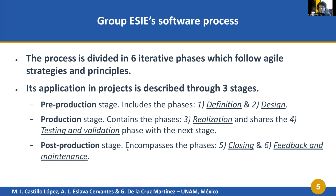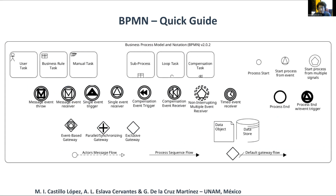In the post-production stage we encompass the phases of closing, feedback, and maintenance. To present the group SEA process, we'll be using the business model notation. Here is a quick guide for anyone who wishes to revisit our presentation — these are the symbols we use in our diagrams, and I'll describe each stage of the process as we go.